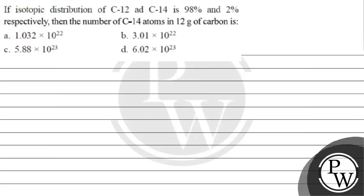Let's read this question. The question says if isotopic distribution of C-12 and C-14 is 98% and 2% respectively, then the number of carbon-14 atoms in 12 grams of carbon is. Options are given to us.